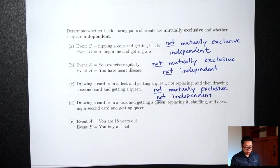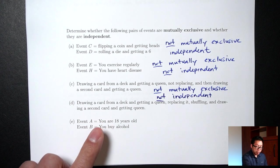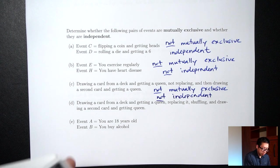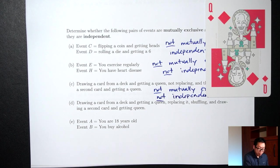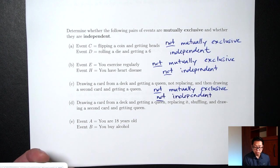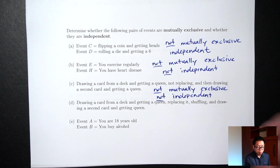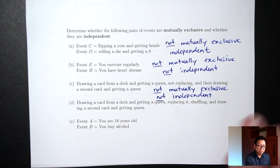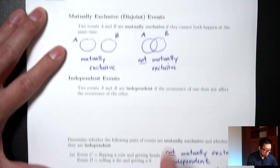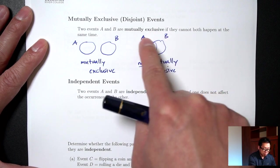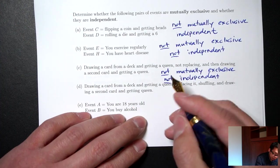Part D is a similar situation: drawing a card from a deck and getting a queen, but this time we put it back, shuffle, and then draw a second card. Are these two things mutually exclusive? Can you get a queen, put it back, reshuffle, pick a second card, and get a queen again? Yes, you can. Because you can get two queens, we're in the situation where you can be in both at the same time, so this will be not mutually exclusive.